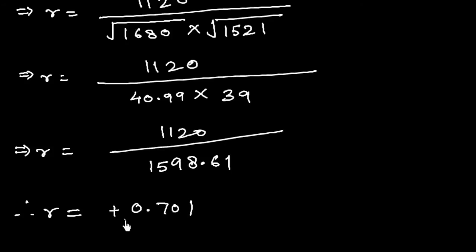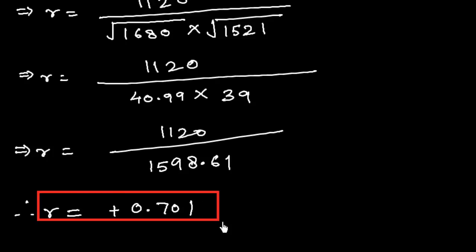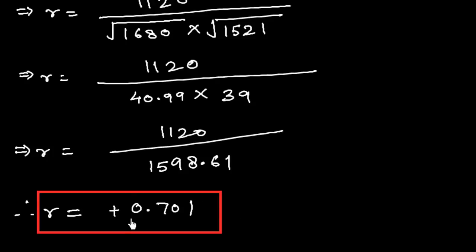So this is positive correlation, and the Karl Pearson coefficient of correlation is 0.701. In this way we can find out the answer to this sort of question using the shortcut method for Karl Pearson coefficient of correlation. Thank you.